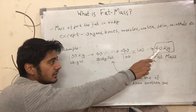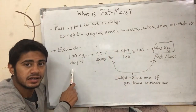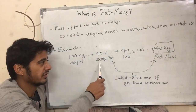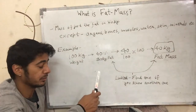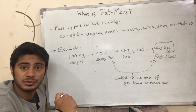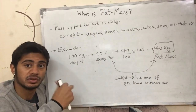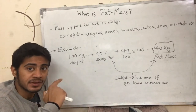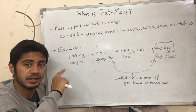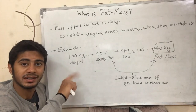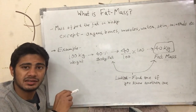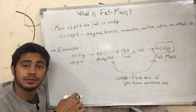If you know the guy's weight, you can find the body fat percentage, and if you know the body fat percentage you can find the fat mass — they are both linked. So if there is a 100 kg guy and he has 20 kilograms of fat on his body, then you know that the guy has 20 kg of fat mass. Remember this term: fat mass is the amount of fat in your body, because we will be using it in the future videos.